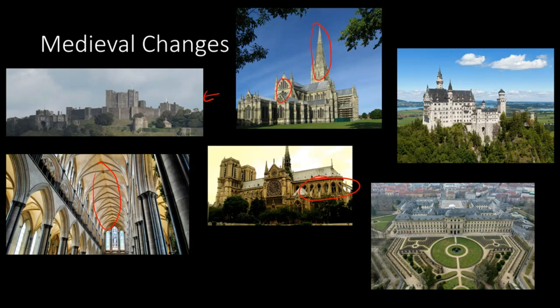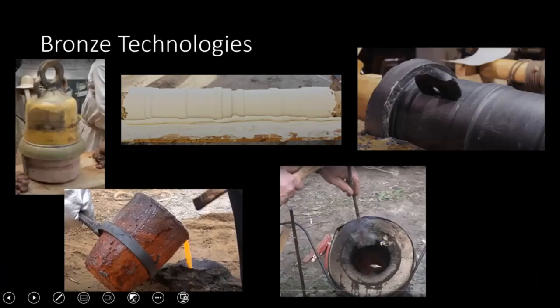So that was how the cathedral worked. We also saw the defensive castle move toward more ornate castle-palace structures built to impress rather than to defend. Those ultimately gave way to entire palace complexes built not only to impress, but also to house administration and allow a government to be operated out of them. That was the evolution of medieval architecture.